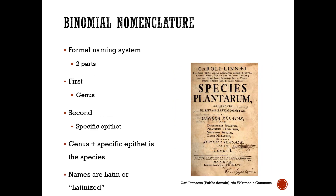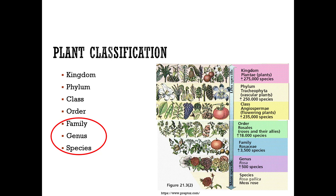Here's a summary of the formal naming system: it has two parts — first the genus, second the specific epithet. Genus plus specific epithet equals the species. The names are Latin or Latinized. In practice, horticulturists typically work with family, genus, and species.